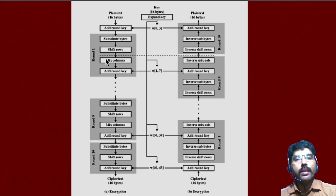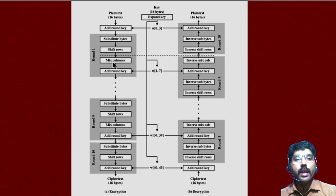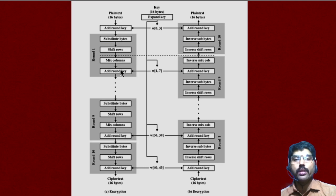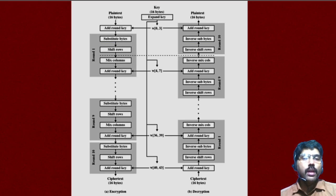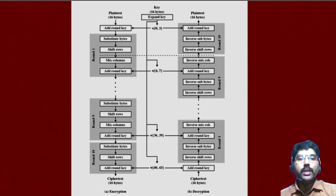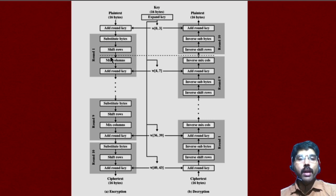In each round there are 4 stages or 4 steps. One step is actually a permutation and the remaining 3 stages are substitutions. We will learn one by one what these steps are. The first step is substitute bytes. It uses an S-box table to perform a byte-by-byte substitution of the block. There is a table called the S-box table, also called the substitute-box table.